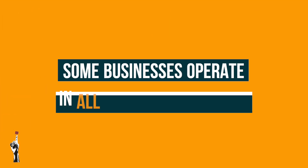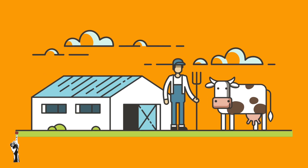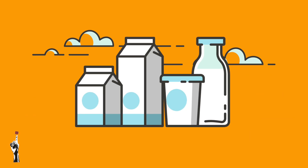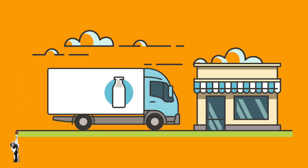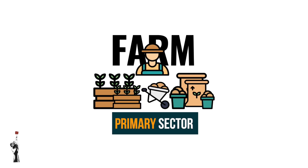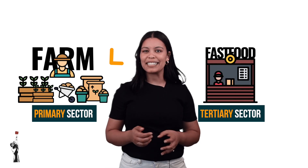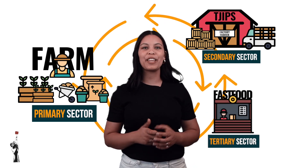Some businesses operate in all three economic sectors. For example, a milk farmer that milks his own cows uses that milk to produce a finished product, which is transported to a business and sold to customers. Some businesses may see a fit to take control of the primary sector so that they are not dependent on different suppliers. In other instances, businesses are dependent on one another to fulfill their various duties.